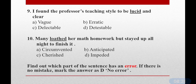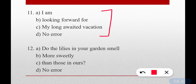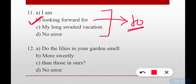Next, five questions on error detection. Find out which part of the sentence has an error; if no mistake, mark D for no error. Question number eleven: 'I am looking forward for my long awaited vacation.' Option B contains the error. The correct form is 'looking forward to' — not 'for'. Looking forward to is a phrasal verb meaning excited about something happening in the future.